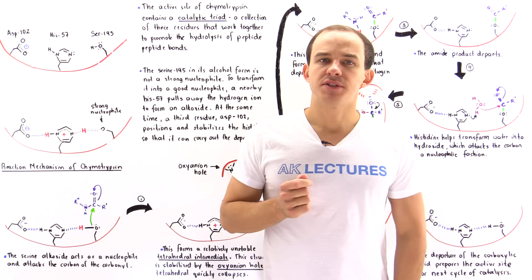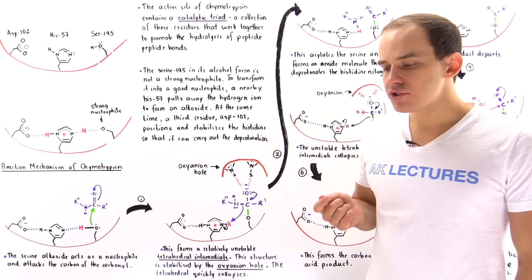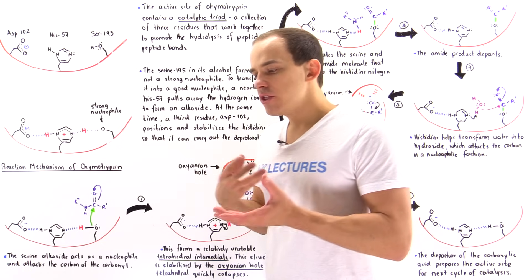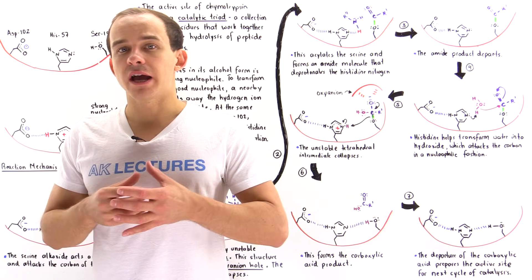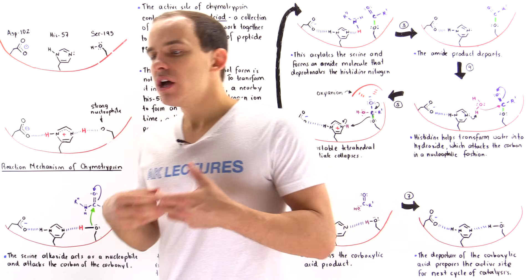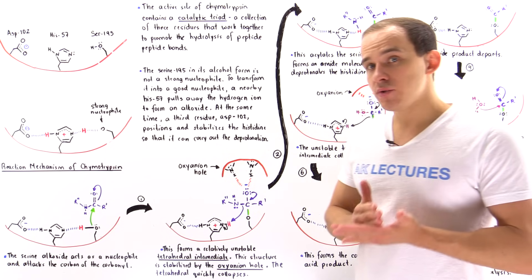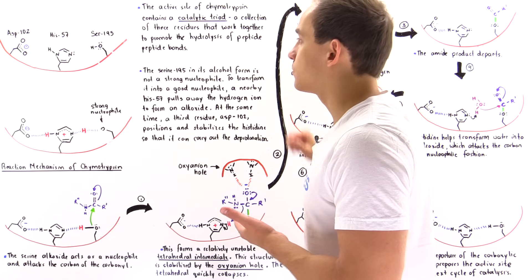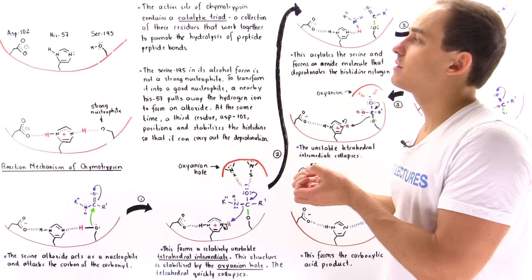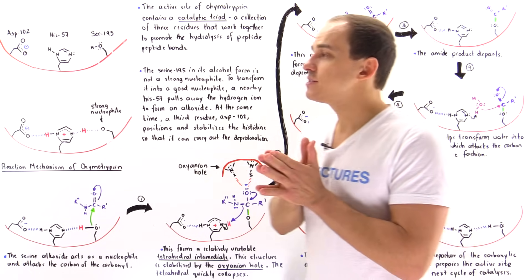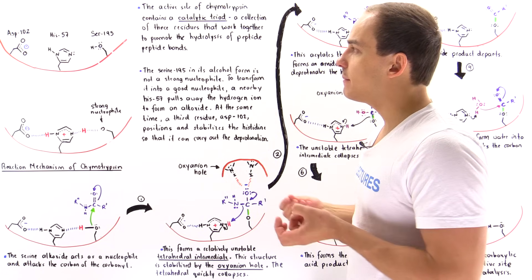If we examine the active site of chymotrypsin, we're going to discover a collection of three different residues — three different amino acids that act together to promote and catalyze the cleavage of peptide bonds. This collection of three amino acids is known as the catalytic triad. It's the catalytic triad inside the active site of chymotrypsin that essentially catalyzes the cleavage of peptide bonds.